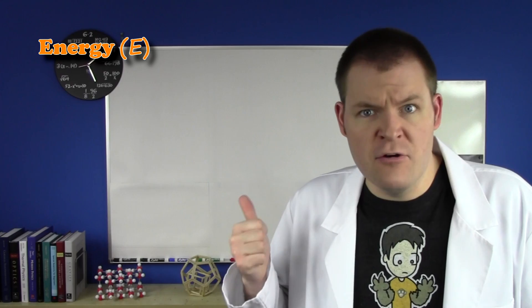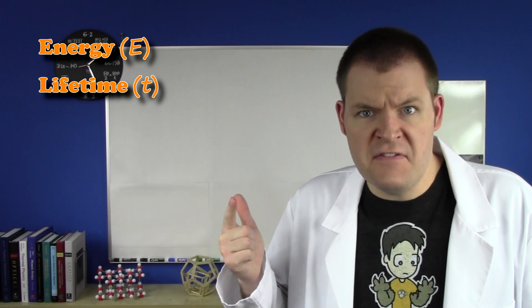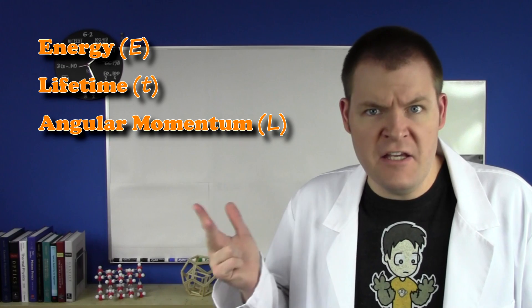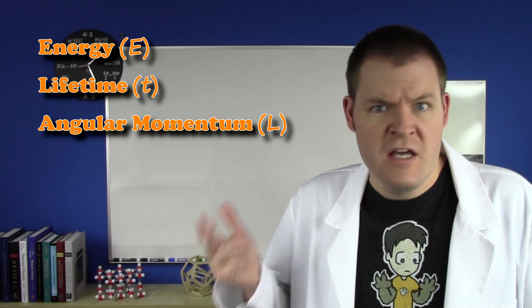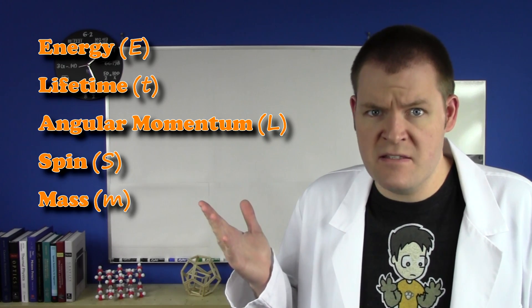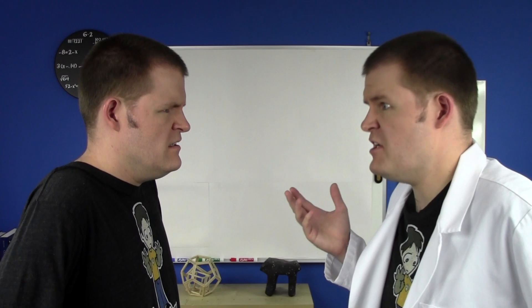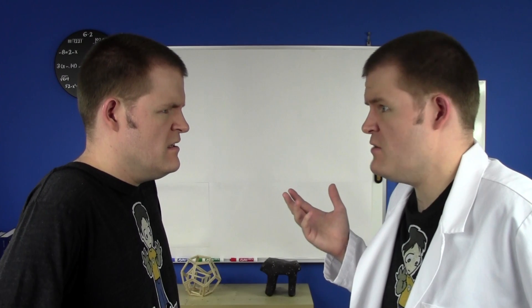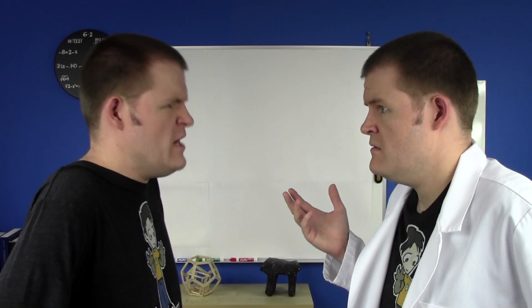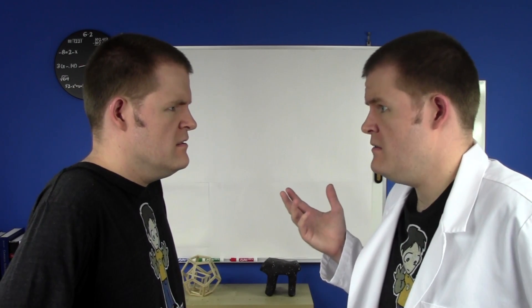Additionally, the principle doesn't just apply to position and motion. Just about anything you can measure about a particle is involved in at least one of these inequalities: energy, lifetime, angular momentum, spin, and even sometimes mass. Mass? Yep — particularly for neutrinos. That's crazy. Seriously crazy.